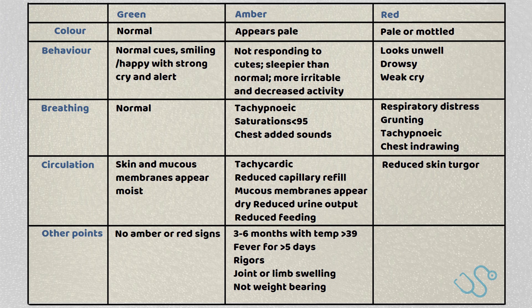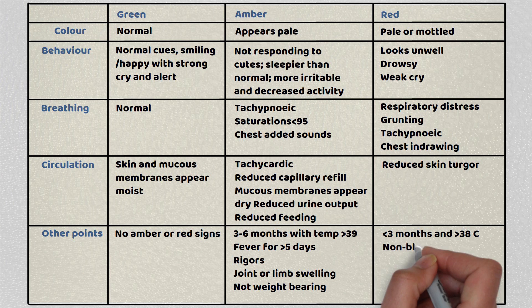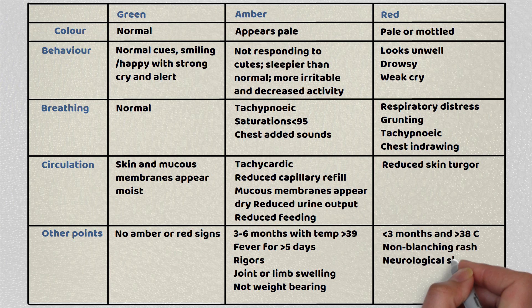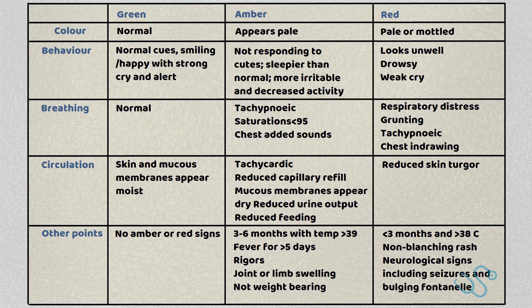Other red points include a child with a fever under the age of 3 months and above 38 degrees. They may have a non-blanching rash or neurological signs such as seizures or a bulging fontanelle.